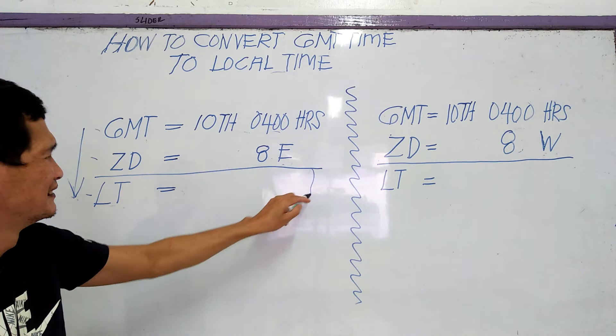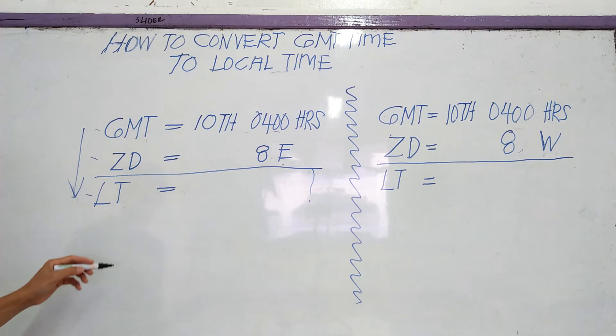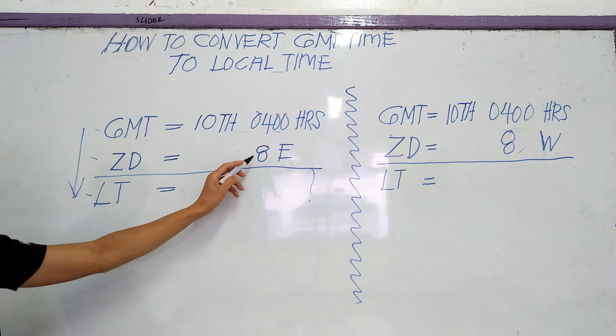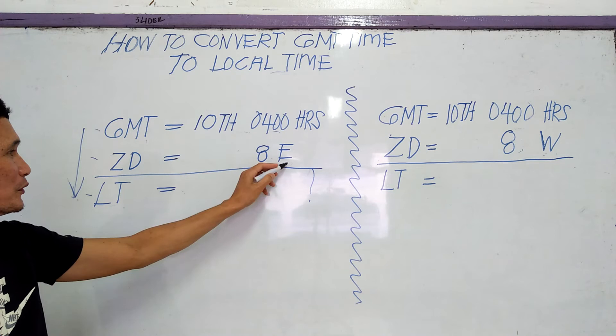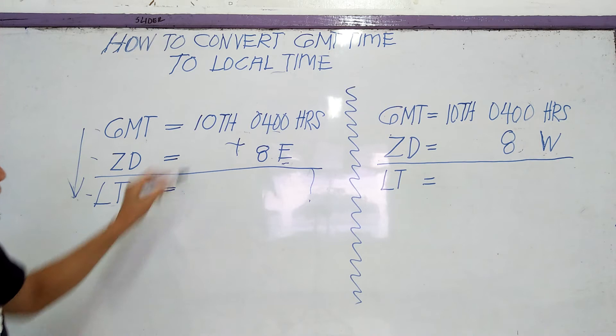In converting GMT to local time, we will say first the zone description which is, if it is longitude east, this will be add or plus.